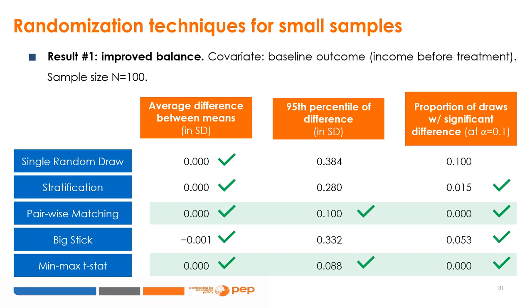Looking at the proportion of draws showing a significant difference in means at 10%, this proportion is exactly 10% in the single random draw method, as expected for a type 1 error of 10%. However, the four alternative methods achieve better balance — in particular, pairwise matching and min-max t-stat achieve balance in all 10,000 simulations for this variable. Across all three measures, pairwise matching and min-max t-stat prove to be superior at achieving balance.